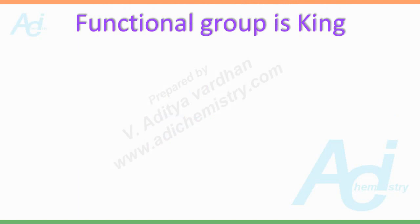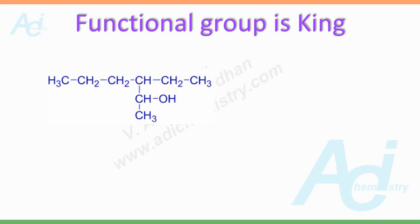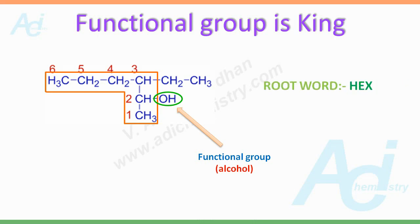The parent chain must contain as many functional groups as possible. The functional group is the king which decides the parent chain. Look at this molecule — there are 2 longest possible carbon chains with 6 carbon atoms in each. The first one is the straight one, whereas the second one is L-shaped and has the same number of carbons. Since there is an alcoholic functional group OH on the second chain, we must choose this as the parent chain. Hence the root word is hex. The CH2CH3 group is considered as a substituent, referred to as the ethyl group.